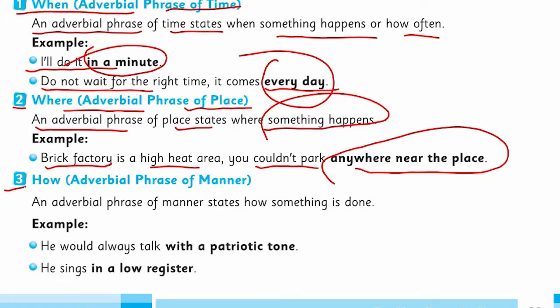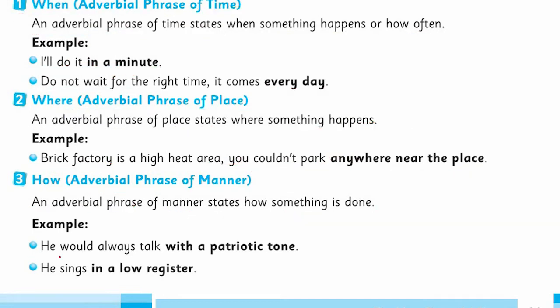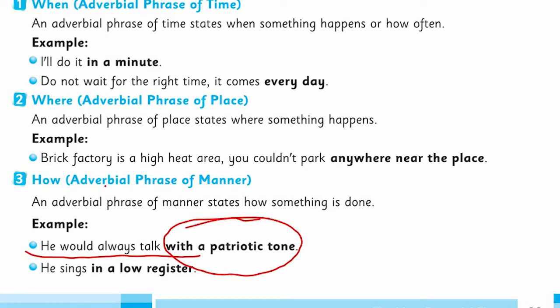The third one — how — adverbial phrase of manner. An adverbial phrase of manner states how something is done. For example: 'He always talks with a patriotic tone.' 'With a patriotic tone' is an adverbial phrase of manner.